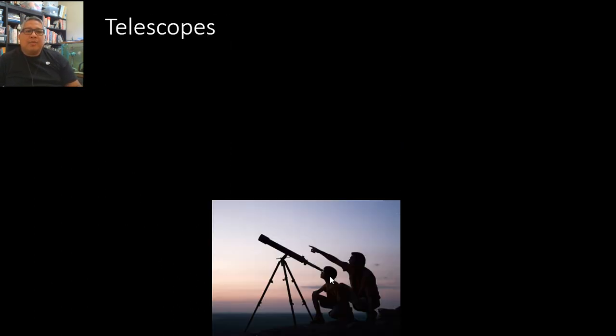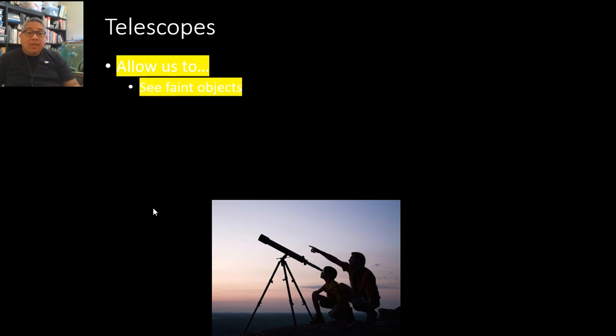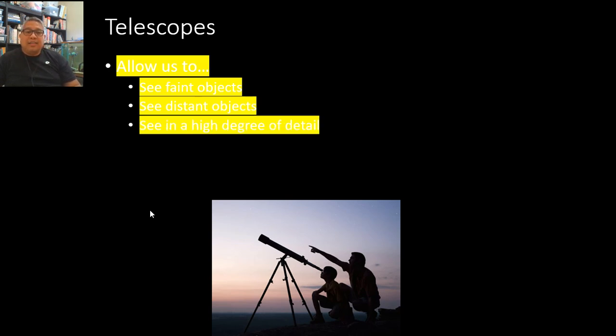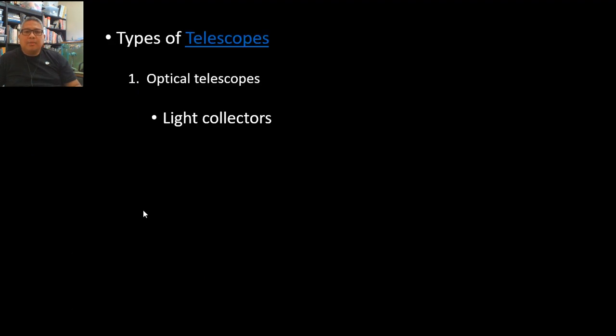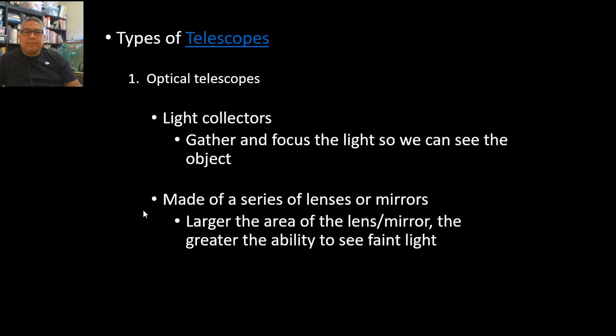Now we're looking at telescopes. Telescopes are the first instruments used to observe the movement of the stars and the night sky. It will allow us to see faint objects, distant objects, and see them in high degree of detail. That's how helpful telescopes are. We have two types of telescopes: optical telescopes, which use light—they gather light and focus it in order for us to see. They can be made of mirrors or lenses.